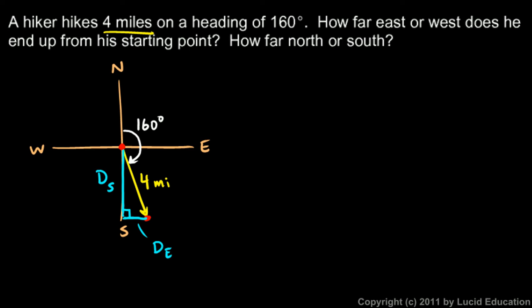So let's find the east distance, find D_e. Well, think about this angle, that's 20 degrees. I know that the sine of the 20 degree angle must be the opposite over the hypotenuse.